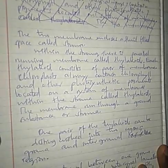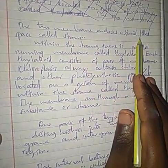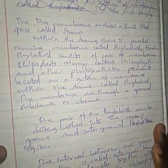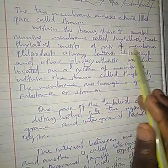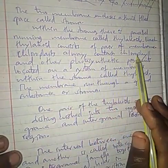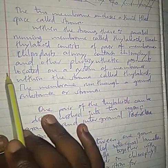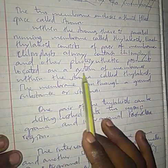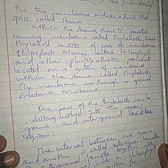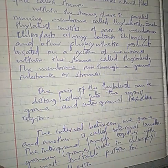In the structure of Chloroplasts, two membranes enclose a fluid-like space called the stroma. Within the stroma there is a parallel membrane system called thylakoids. Each thylakoid consists of a pair of membranes. Chloroplasts always contain chlorophyll and other photosynthetic pigments located on this system of membranes.